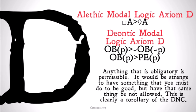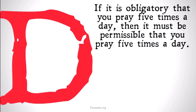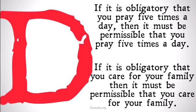And this makes sense: anything that is obligatory is permissible. It would be strange to have something that you must do to be good, but have that same thing be not allowed. This should clearly be seen as a corollary of the DNC — the Deontic Non-Contradiction axiom. For example, if it is obligatory that you pray five times a day, it must be permissible that you pray five times a day. If it is obligatory that you care for your family, it must be permissible or allowed that you care for your family.